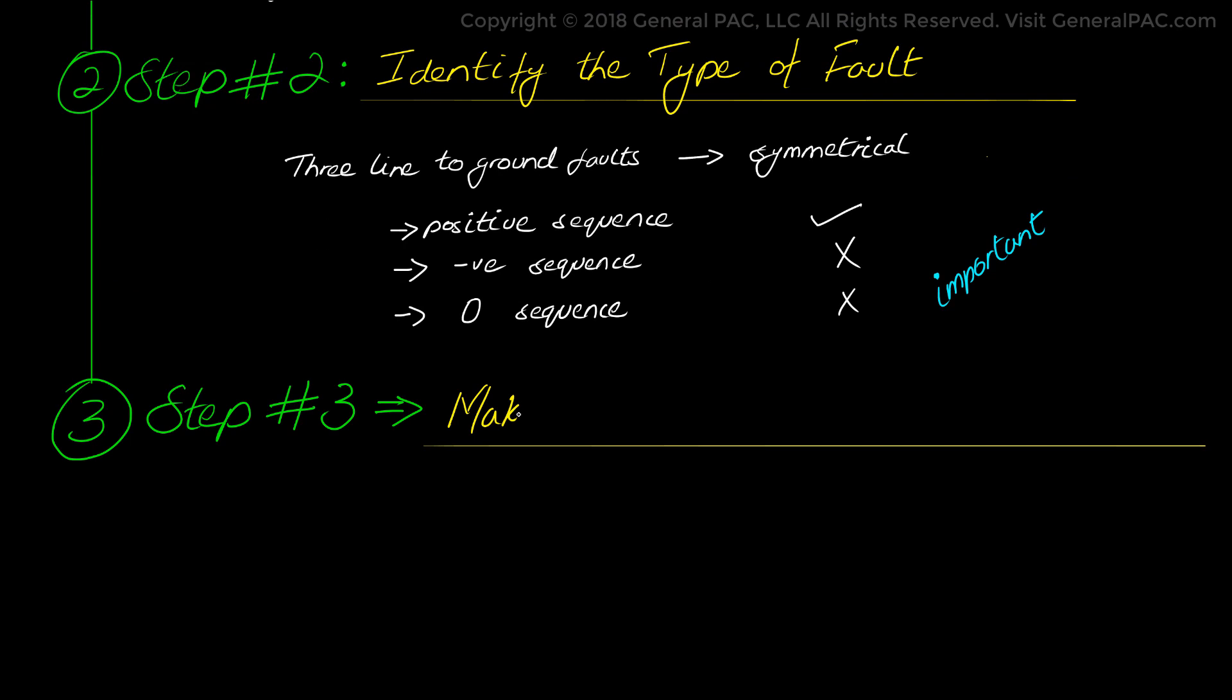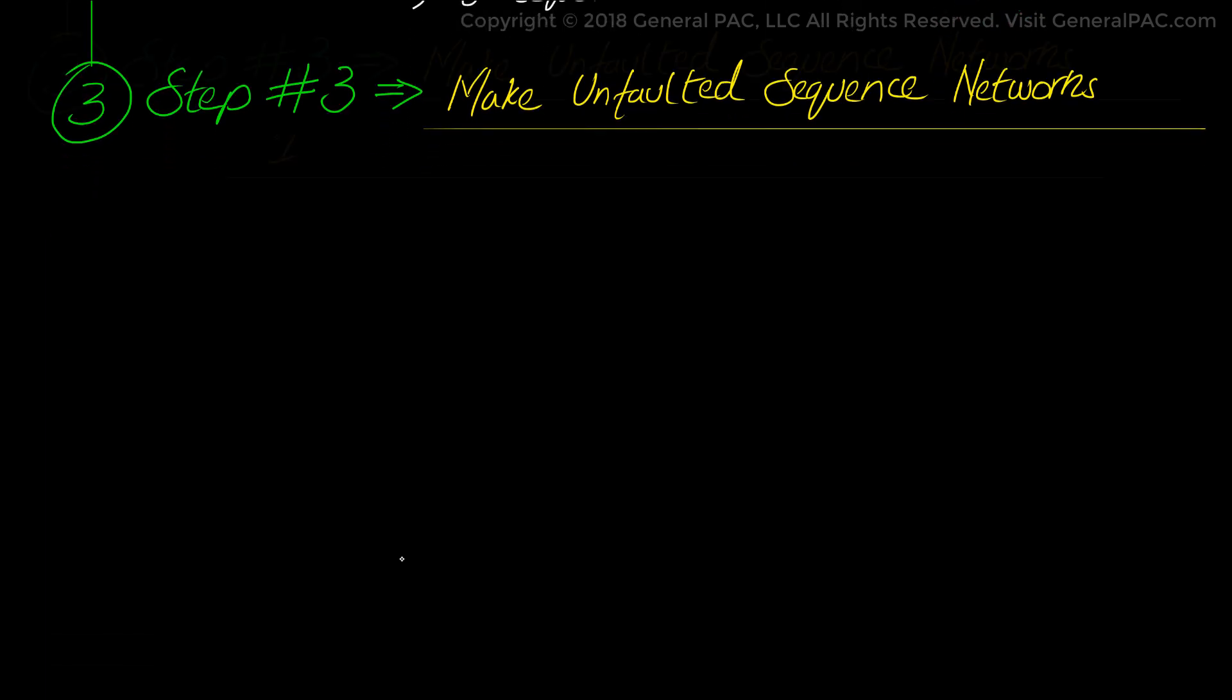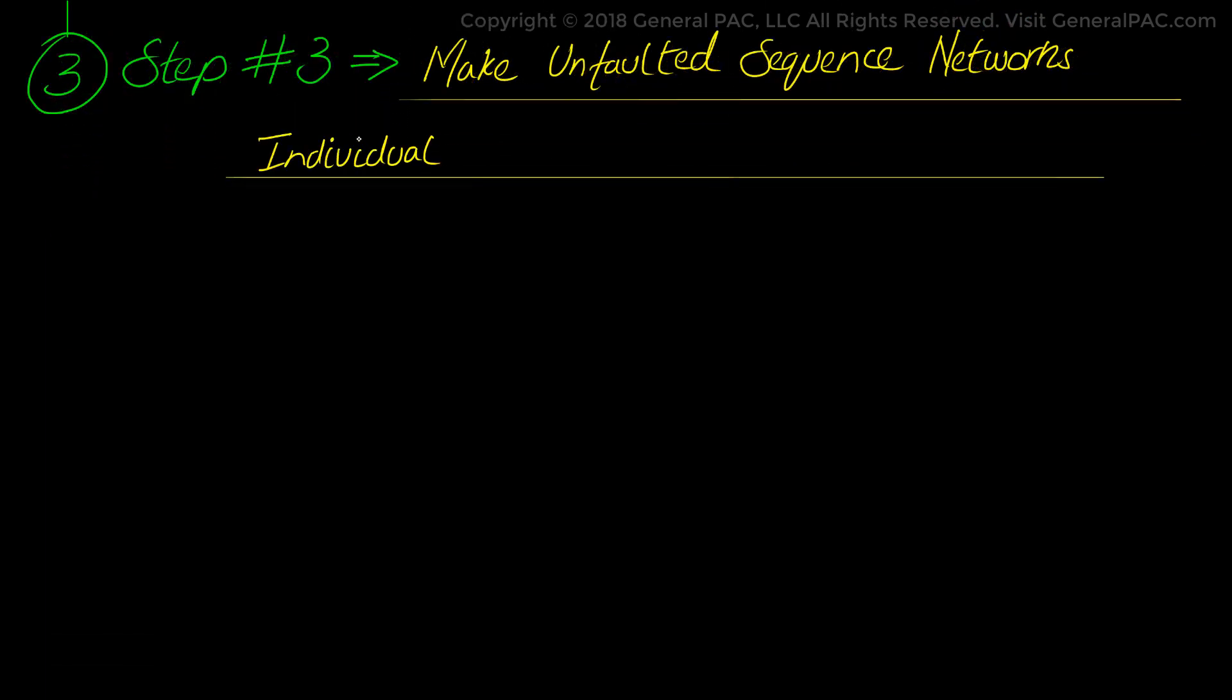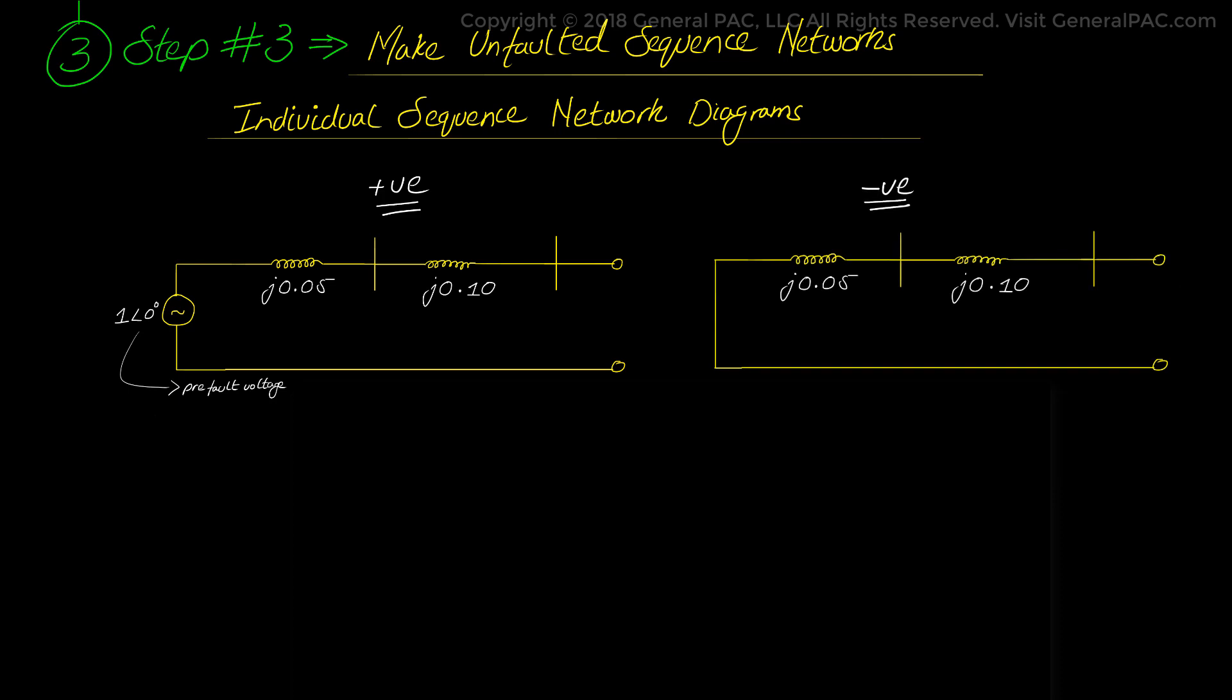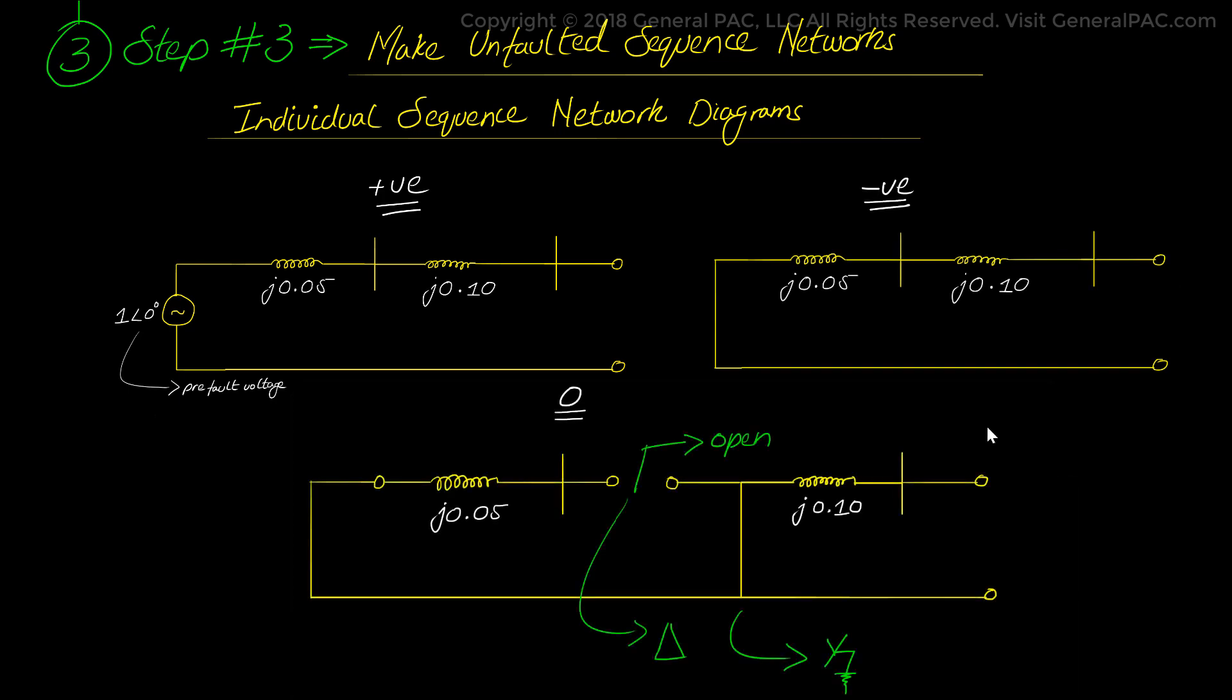Next we move on to step number 3 which asks us to make an unfaulted sequence network from the per unit converted system in step number 1. These are individual sequence network diagrams which were converted in part 2C of the series and here we draw the same networks below. So we have the positive sequence network, we have the negative sequence network and we have the zero sequence network. Again please review part 2C if you'd like to know more details.